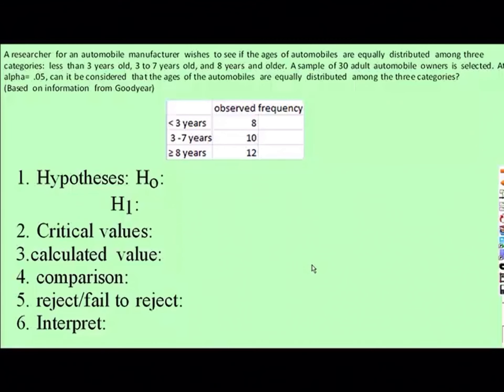A researcher for an automobile manufacturer wishes to see if the ages of automobiles are equally distributed among three categories: less than 3 years, 3 to 7 years, and 8 years and older. A sample of 30 adult automobile owners is selected. At alpha equals 0.05, can it be considered that the ages of the automobiles are equally distributed? In other words, are the proportions equal among the three categories?